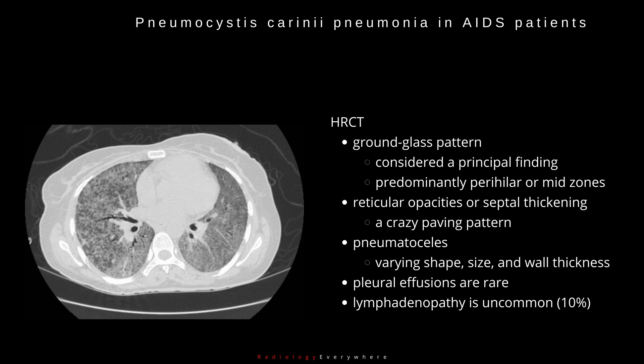Pneumatoceles are of varying shape, size, and wall thickness. Pleural effusions are rare. Lymphadenopathy is uncommon, occurring in approximately 10% of cases.